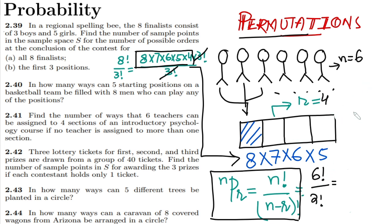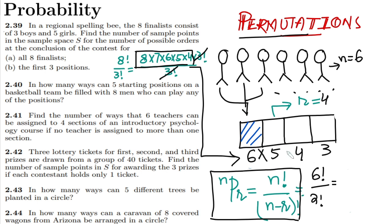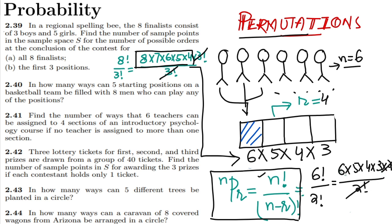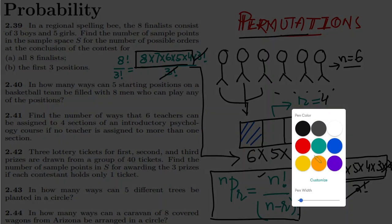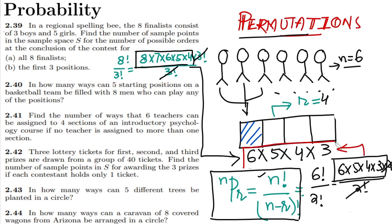Using the permutation formula with n = 6 and r = 4: 6 factorial divided by (6 minus 4) factorial = 6 factorial divided by 2 factorial. Expanding: 6 × 5 × 4 × 3 × 2! divided by 2!, the 2 factorials cancel out. We can also see this directly: for the first section there are six options, then five, then four, then three — multiplying them together gives the same answer. This confirms both methods are consistent.